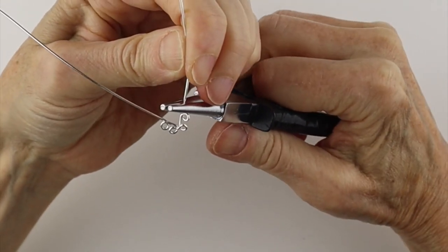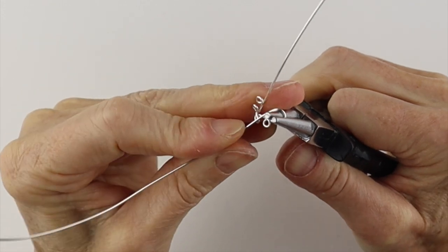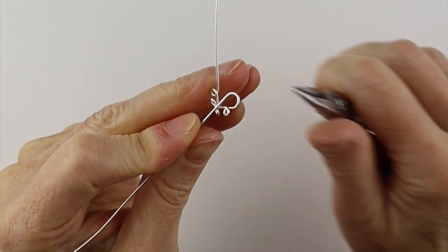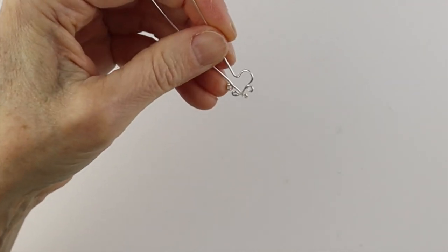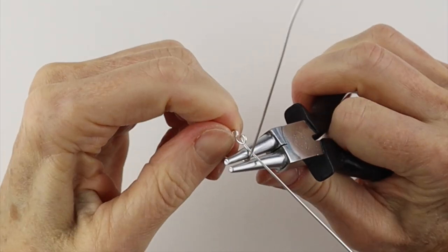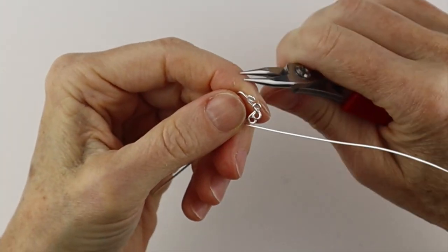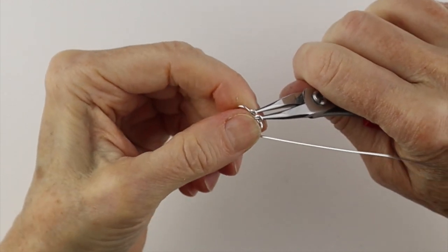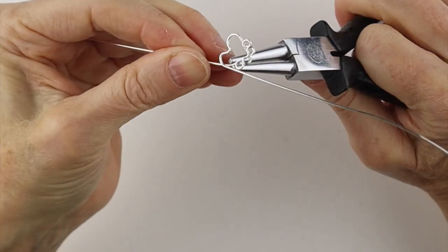So now we're going to form the bottom of the paw. Bring it to the front, curve that around, bring it down and curve it up. You can always adjust these by bringing them in a little bit and then curve the back wire down.